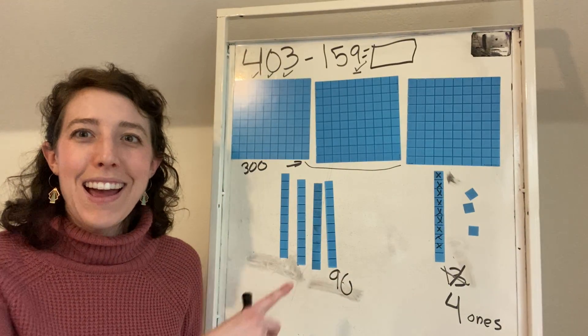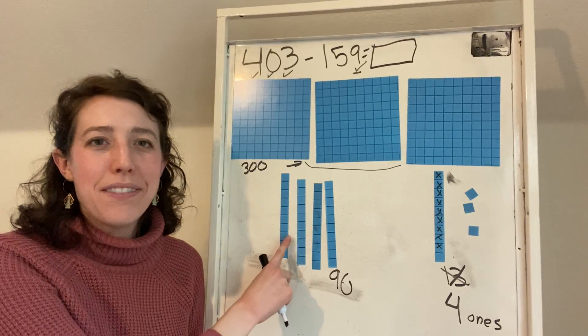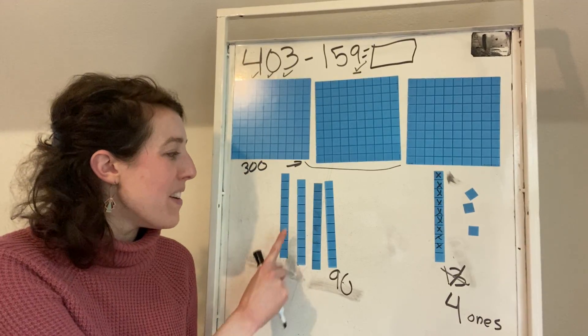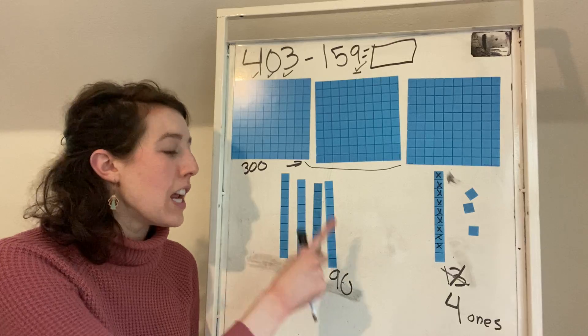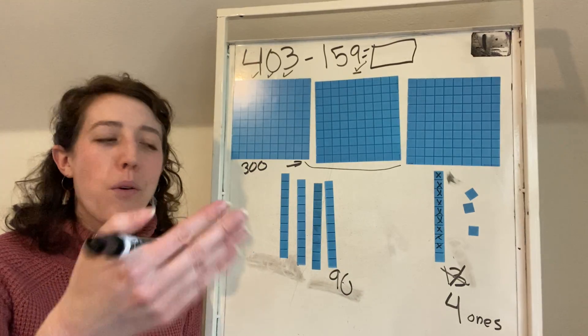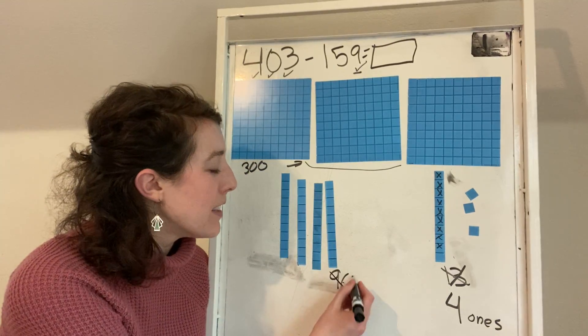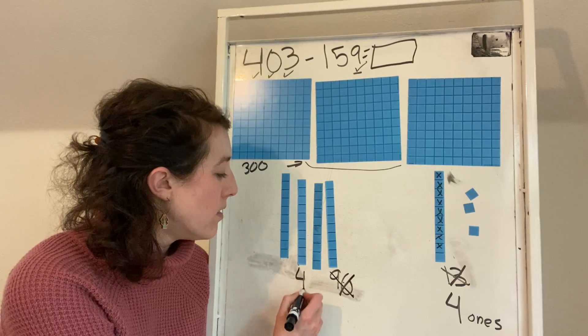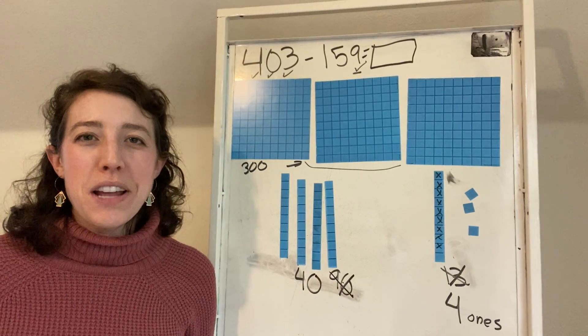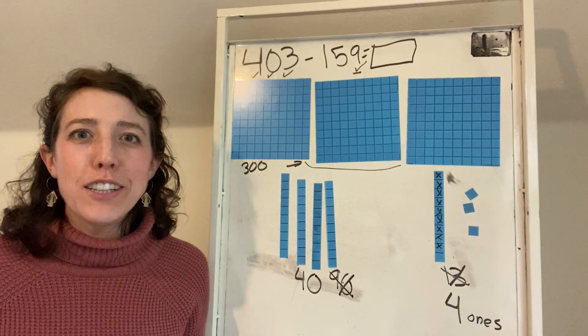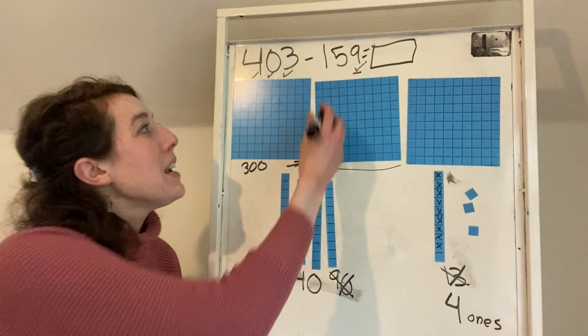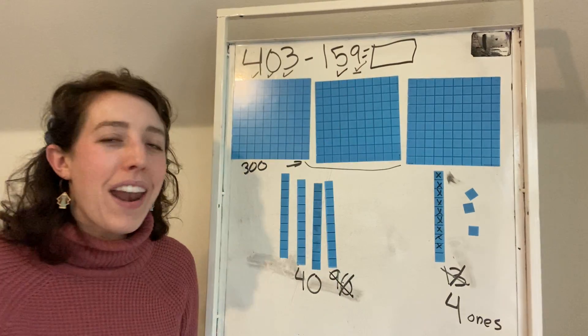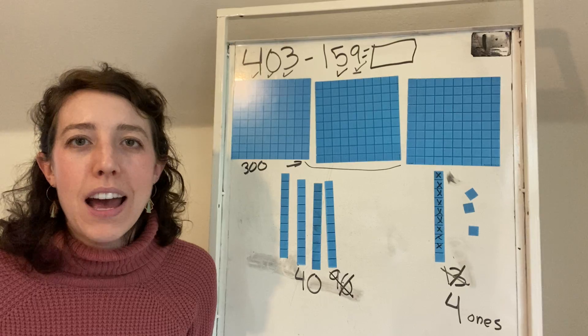So look, how many tens do I have left? I have 10, 20, 30, 40 or four tens. So I'm going to x out my 90 to show that I don't have 90 anymore. I just have 40, which means now that I have subtracted my five tens.